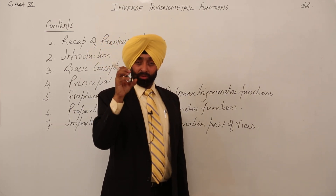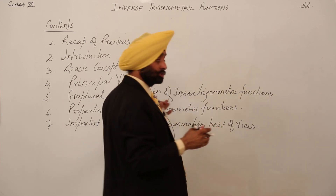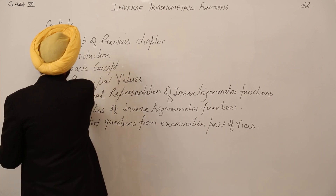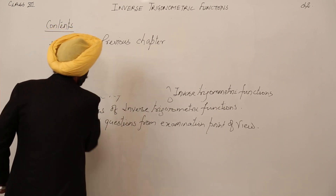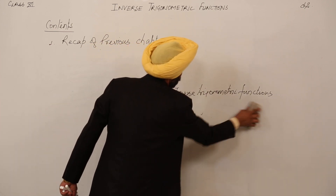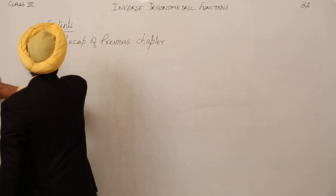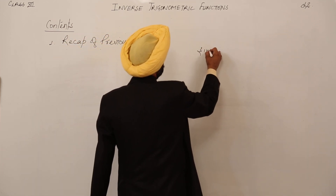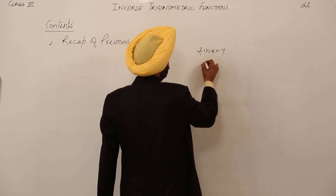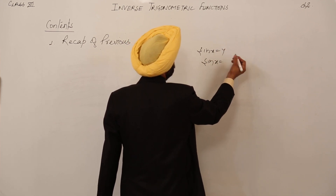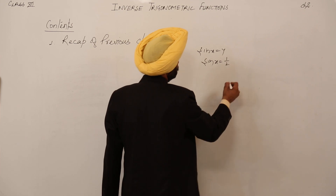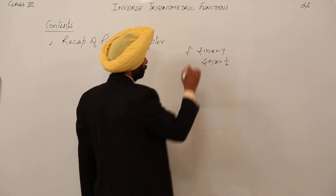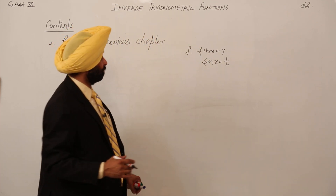So now, just going for a small recap of the trigonometric ratio. Let's start it. Moving for the recap of the previous chapter — in the recap, I am going to tell you about one trigonometric ratio, and let it be sin x. Suppose we have sin x = y, and we write sin x = 1/2, for any value. We are going to start from sin x = 1/2.